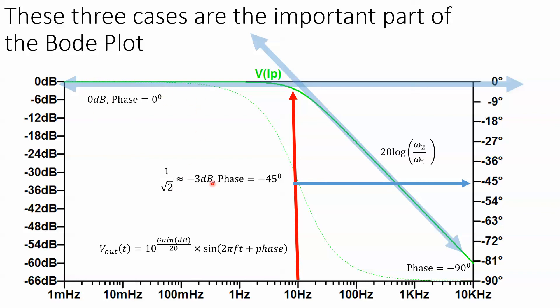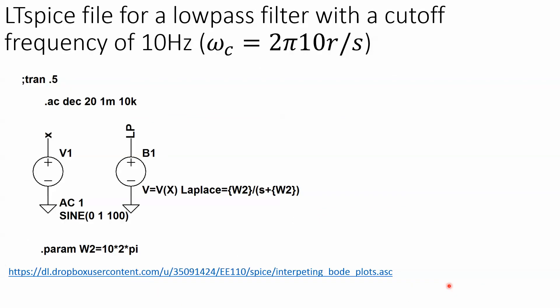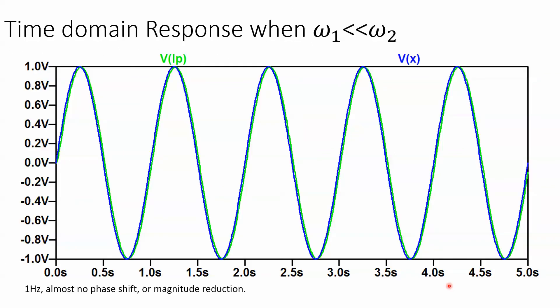But we have 0 dB, 0 phase shift, minus 3 dB, minus 45 phase shift, and then over here, we're following this relationship with a phase of minus 90. This was a circuit that I used to create these plots. You can download it and run it if you like.